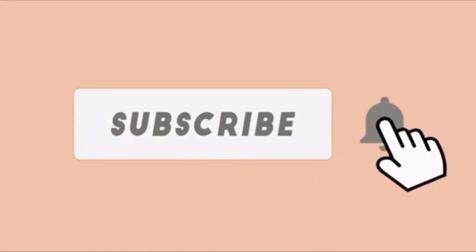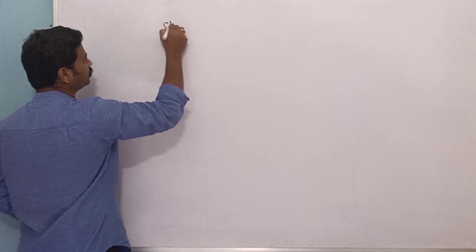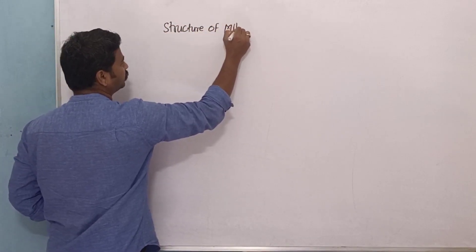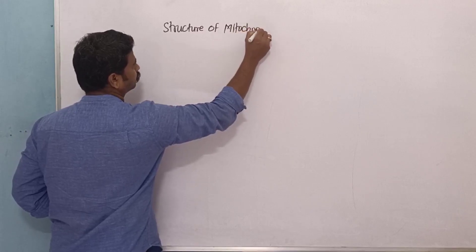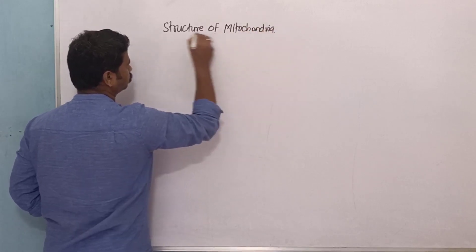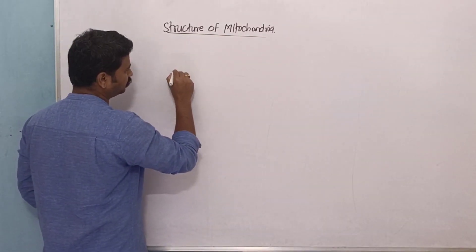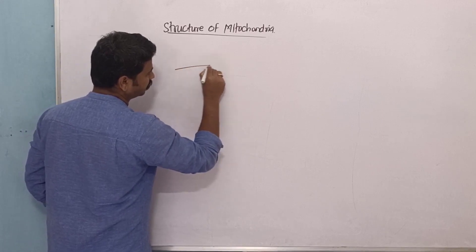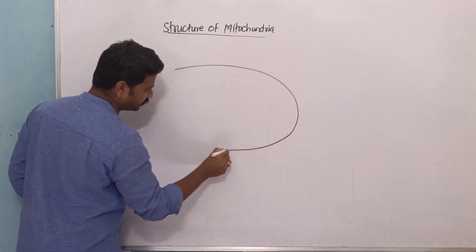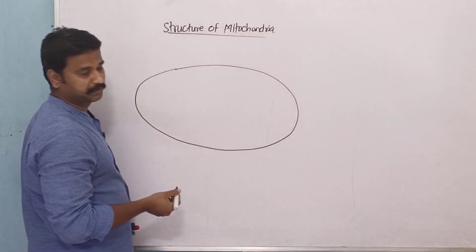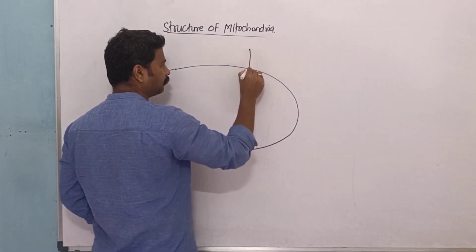Let's learn the structure of mitochondria in detail. We already said that mitochondria is a double membrane-bound structure where the outer membrane is smooth, continuous, and freely permeable. This is the outer membrane of mitochondria.